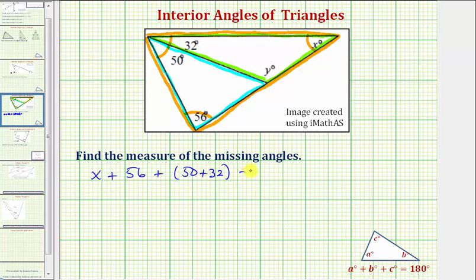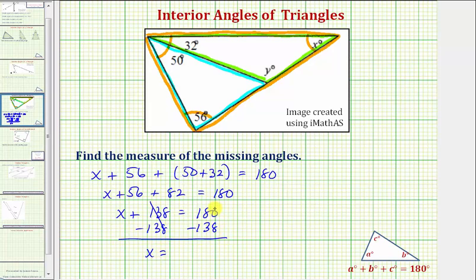And the sum must equal 180. So solving for x, we'd have x plus 56, plus 50 plus 32 is equal to 82, equals 180. Combining like terms, we have x plus 56 plus 82 is equal to 138. And finally solving for x, we subtract 138 on both sides, giving us x equals 180 minus 138 is equal to 42.